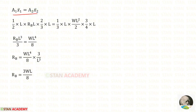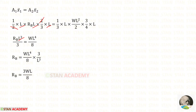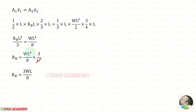Applying Area1·x̄1 and Area2·x̄2 in the expression, we can eliminate the 2s. L×L×L gives L³. Eliminating the 3s, L×L²×L gives L⁴. 4×2 gives 8. Taking L³/3 to the other side and eliminating L³ from L⁴, we finally get Rb = 3WL/8.